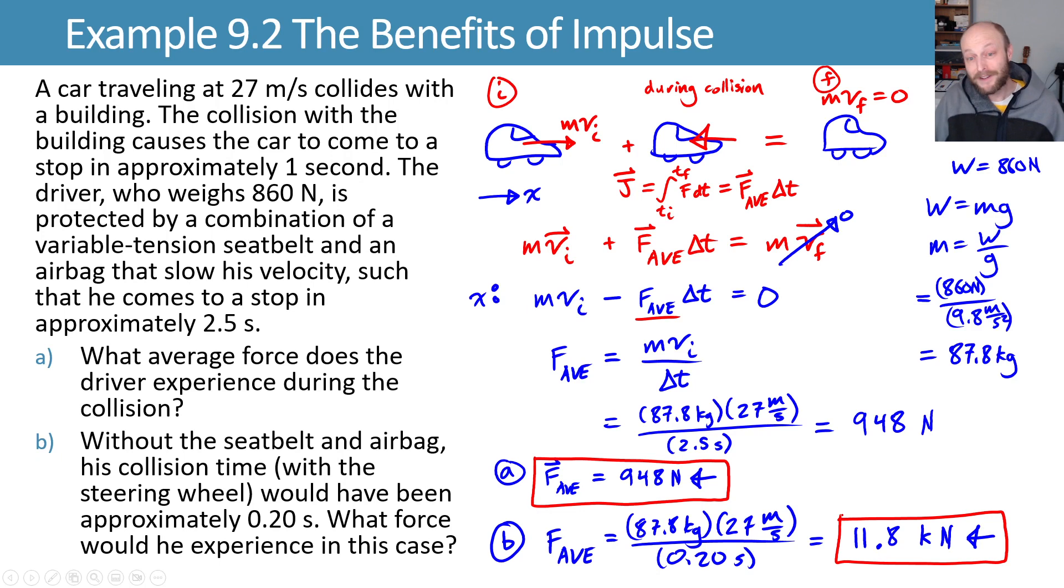Which is significantly higher than the average force we had with the airbags. Because the time of impact is over 10 times shorter, our force of impact, our average force of impact, is over 10 times greater. And that demonstrates the benefits of seatbelts, of airbags, of all that stuff.